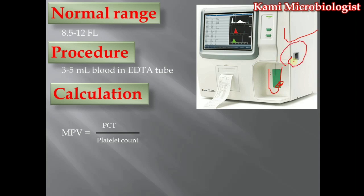If we do not have the machine, we can also perform the test manually. First, we take the platelet volume value, which we already discussed. Then we divide it by the platelet count, which we have also already covered. Once you have these two values and divide them, you get the mean platelet volume. This is how you calculate mean platelet volume manually using this formula.